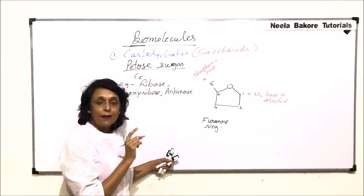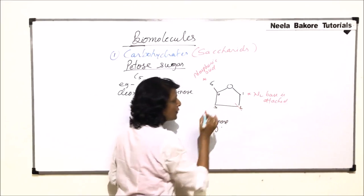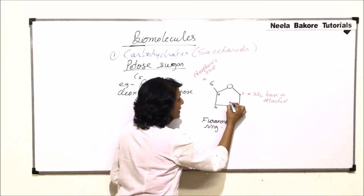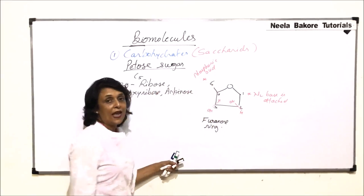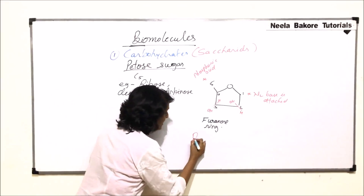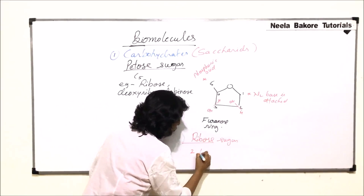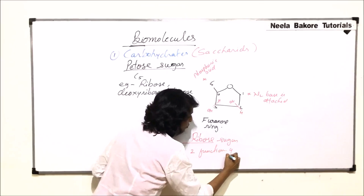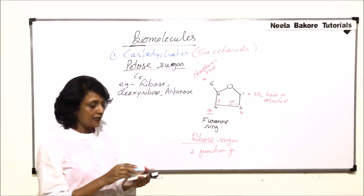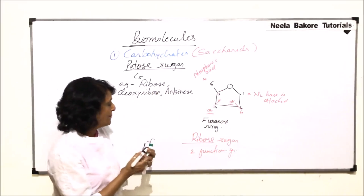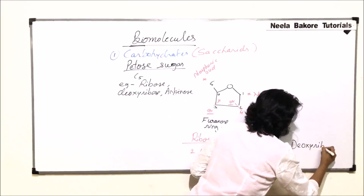The most important carbons to focus on are carbon two and carbon three. In ribose sugar, at carbon two there is an OH group and H, and at carbon three there is also H and OH. This means ribose sugar has two hydroxyl functional groups — one at carbon two and one at carbon three.